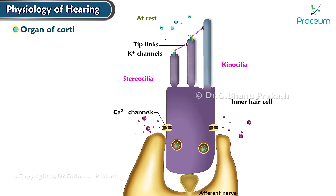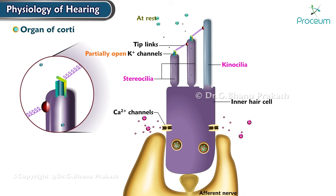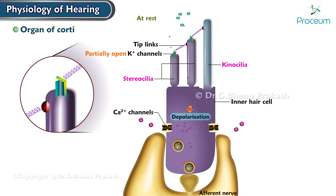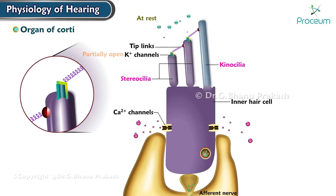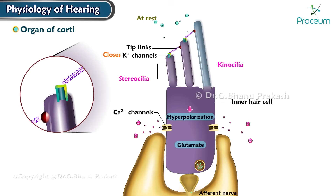At rest, the potassium channels are partially open. Deflection of stereocilia toward the shortest stereocilia closes the potassium channels and inhibits signal transmission by the afferent neurons.